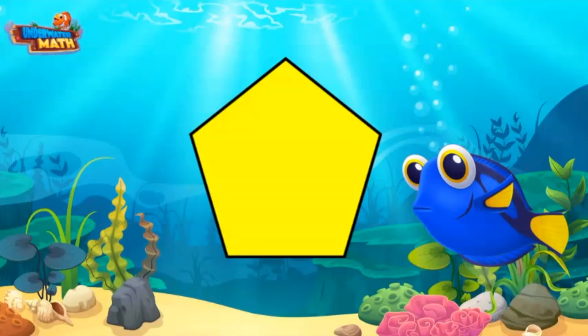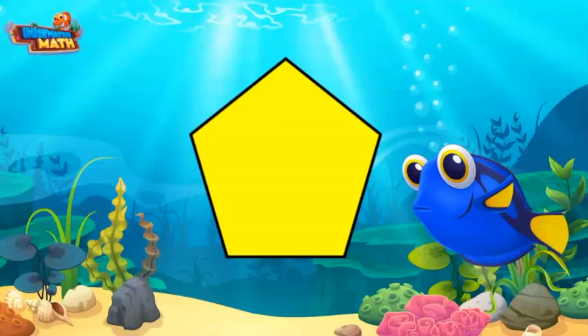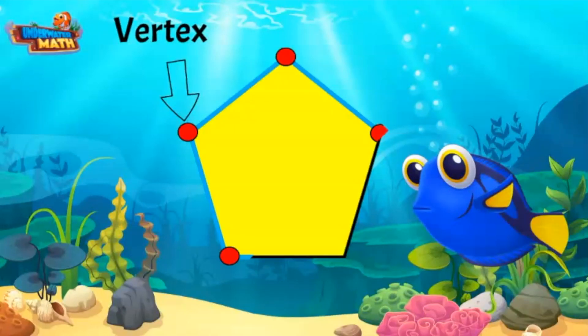Two-dimensional shapes are identified by their sides or edges. This pentagon has five sides. They are also identified by the number of vertices on the shape. Vertices are points where two edges connect. A two-dimensional shape has the same number of sides and vertices. This pentagon has five vertices.